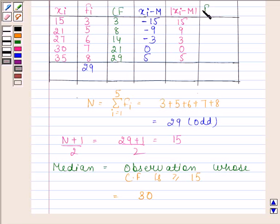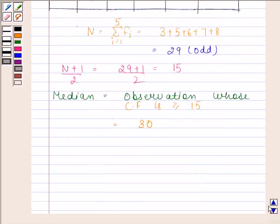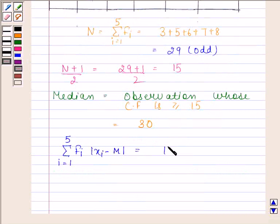Now we will find fi times |xi minus median|. 3 times 15 is 45. 5 times 9 is 45. 6 times 3 is 18. 7 times 0 is 0. 8 times 5 is 40. Adding all of these we get 148. So the summation from i=1 to 5 of fi times |xi minus median| is 148.